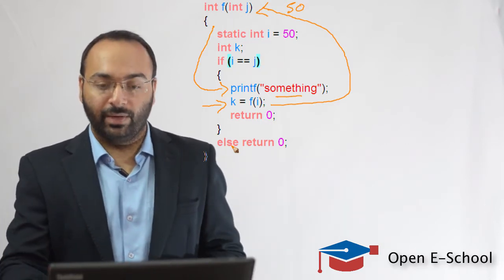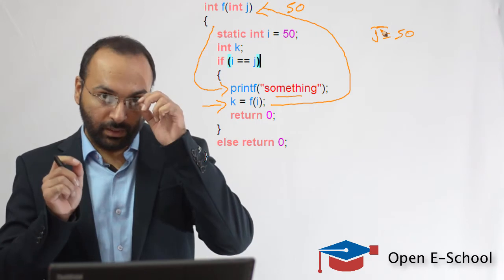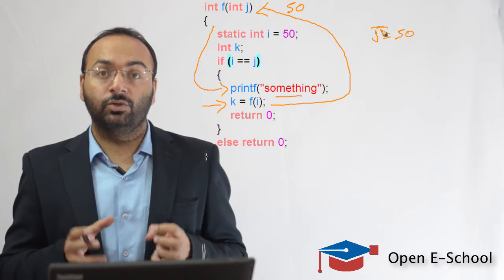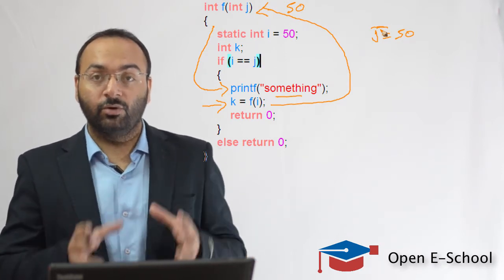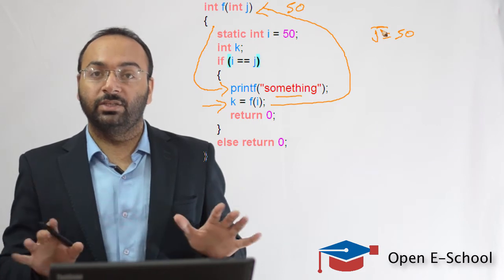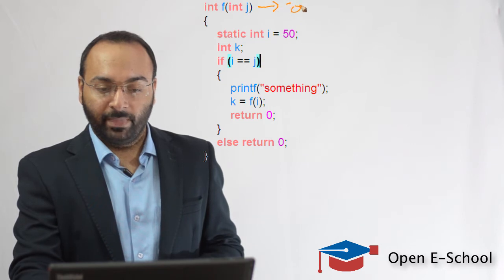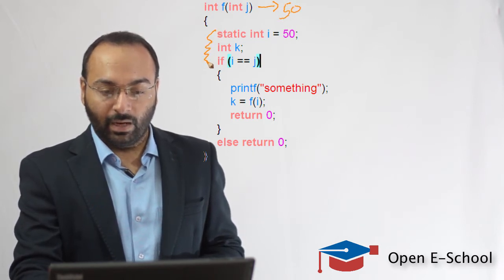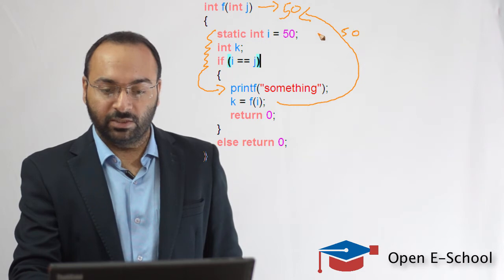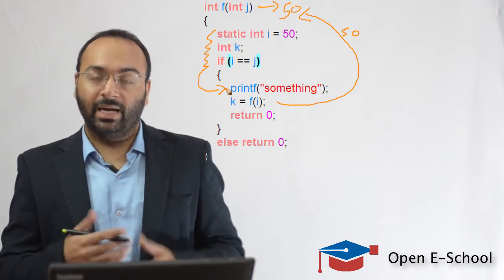This function will never end when j is equal to 50. One of the most important conditions when writing a recursive function is that it should always have an exit clause — a way to terminate. In this program there is no termination condition. Every time we give j as 50, after executing those lines we go inside the if condition again, call the function again with 50, and it keeps repeating.